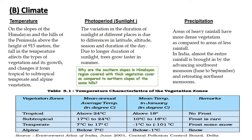In India, almost the entire rainfall is brought in by the advancing southwest monsoon winds that blow from June to September, and the retreating northeast monsoons. If you want to see the temperature characteristics of the vegetation zones, you can refer to table 5.1 in your geography book. Now I have a question for you: why are the southern slopes of the Himalayas covered with thick vegetation as compared to the northern slopes, which have less vegetation?